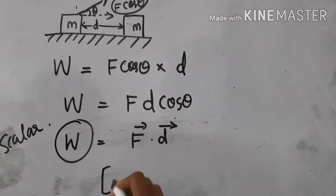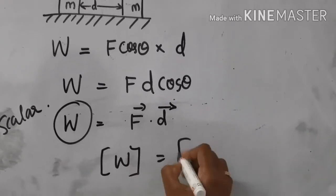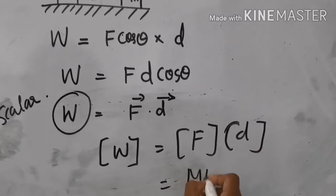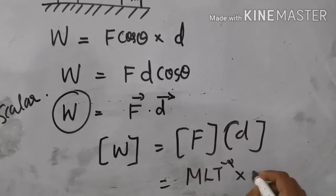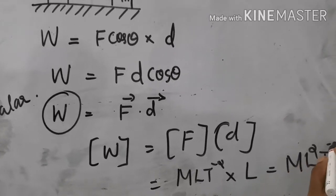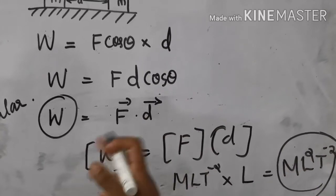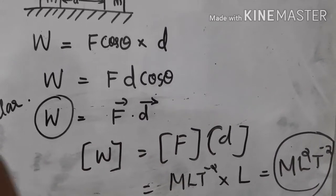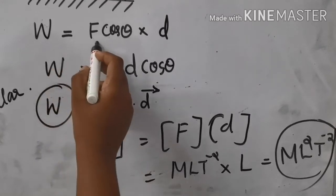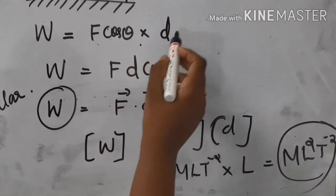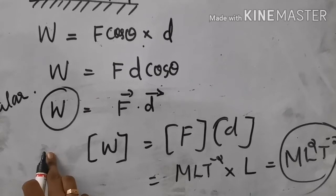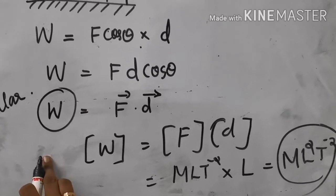The dimension of work is force times displacement. The dimension of force is M L T raised to minus 2, and displacement has dimension L. Therefore, the dimension of work is M L squared T raised to minus 2.